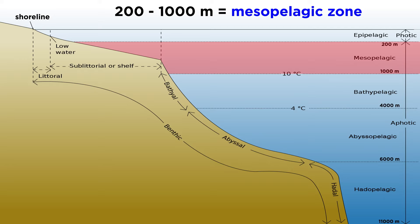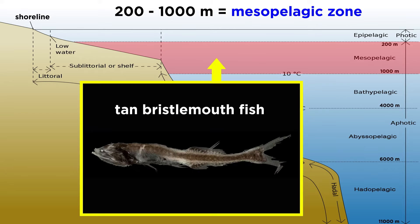Beneath the epipelagic zone is the mesopelagic zone, which extends from 200 to 1,000 meters, where sunlight can no longer reach. Small bristlemouth fish make their home here and migrate up to the epipelagic zone under the cover of night to feed. Although most people have never even seen one, the bristlemouth fish is the most abundant vertebrate on earth, so they are clearly thriving in their deep sea environment.